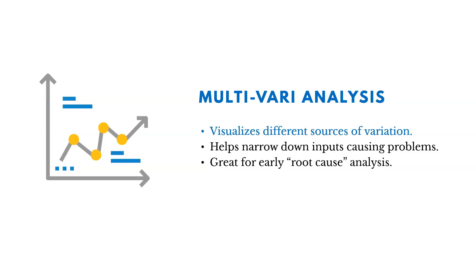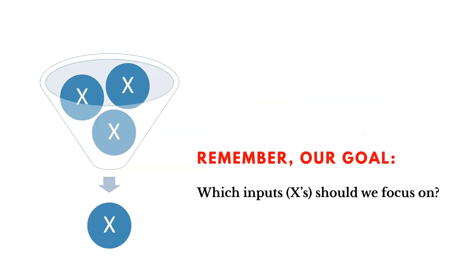Multivariate analysis visualizes different sources of variation or classes of variation, and we'll talk about those different classes. It helps us narrow down our inputs causing problems, and it's great for early root cause analysis — just another way to help us narrow down and analyze our inputs, the x's or the inputs, down.